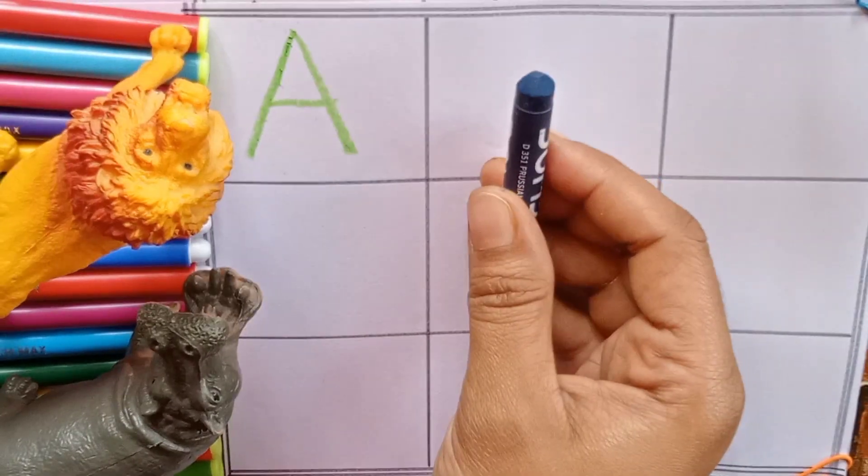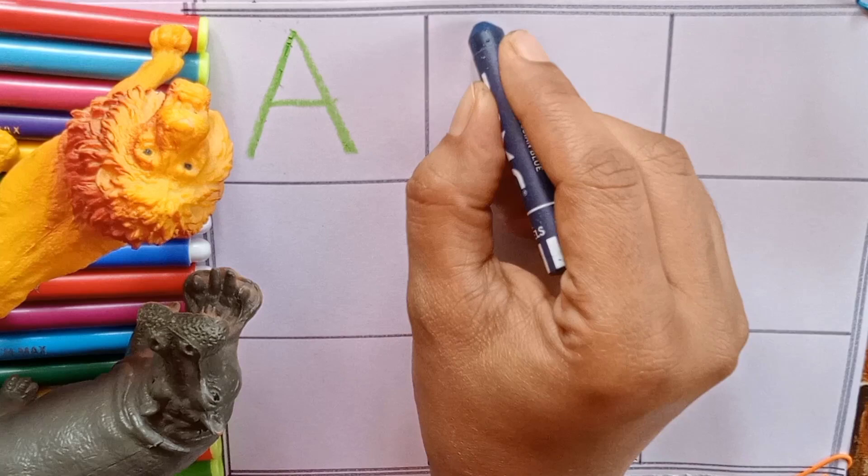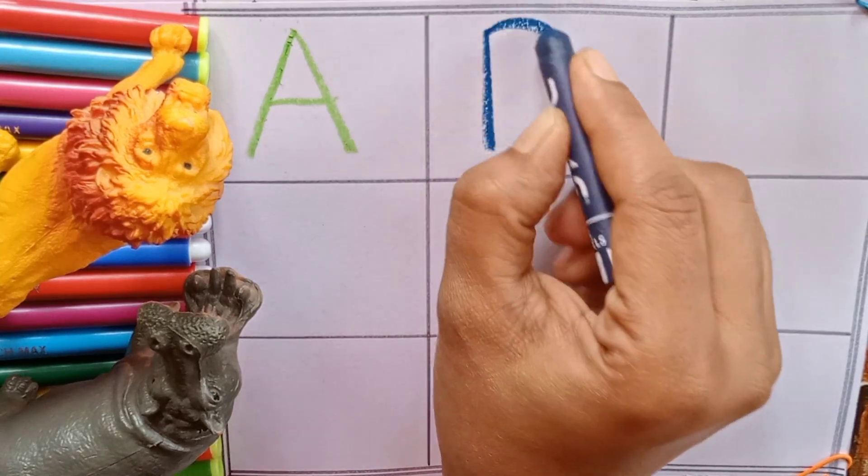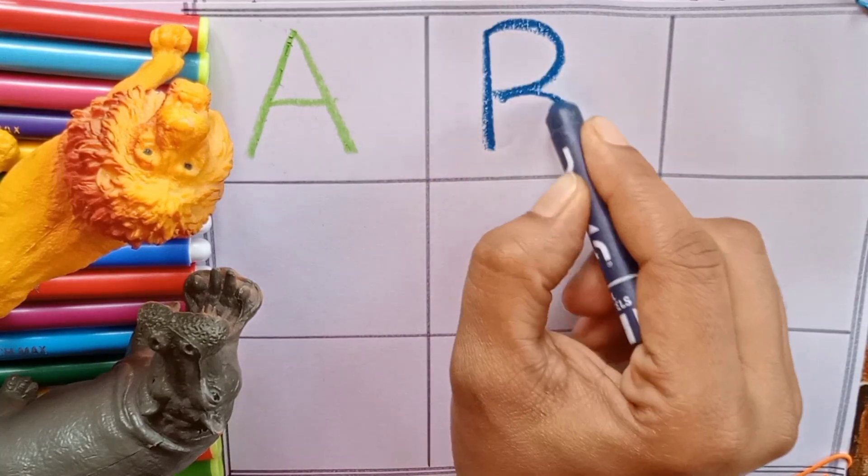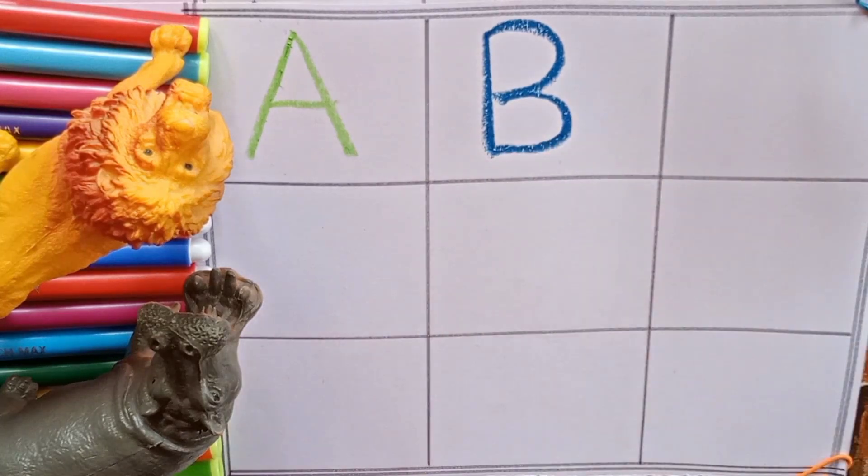Blue color. This is our second color. B. B for banana. Banana is a fruit. B for also bull.